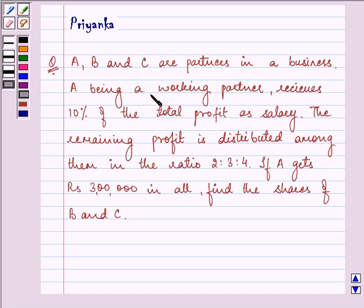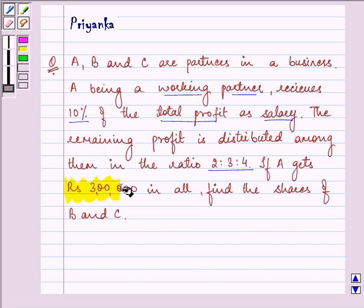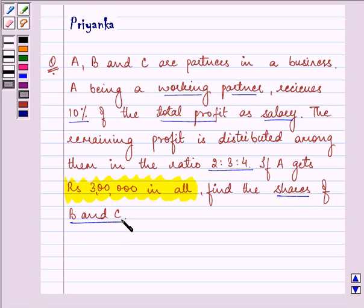A being a working partner receives 10% of the total profit as salary. The remaining profit is distributed among them in the ratio 2 is to 3 is to 4. If A gets rupees 3 lakh in all, find the shares of B and C.